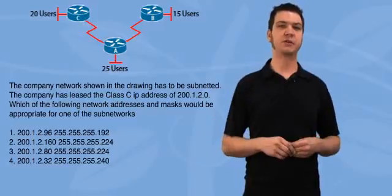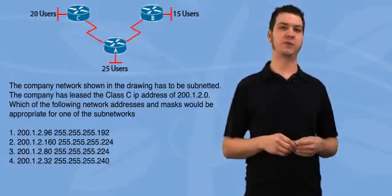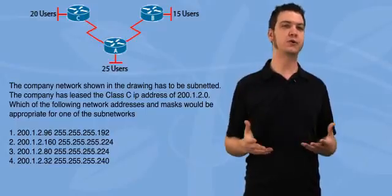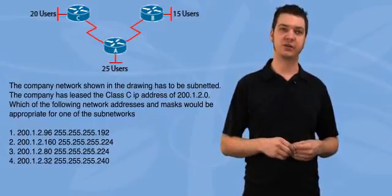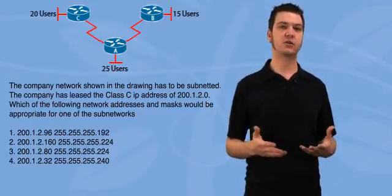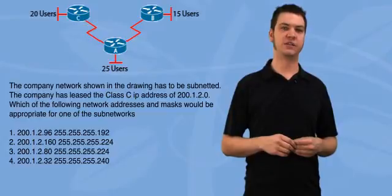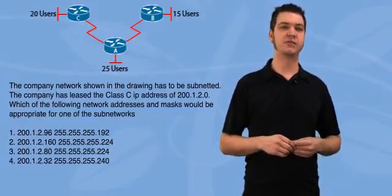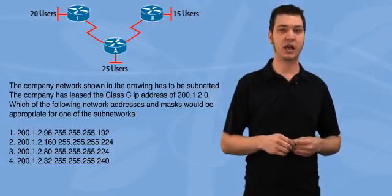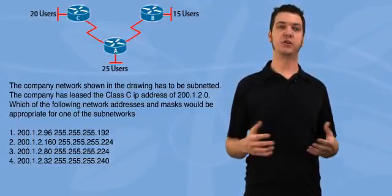In this third example, you're provided a topology and asked to determine a subnet mask that would be appropriate for use by the company. The number of host bits needed are 5, as this allows 32 IP addresses per subnet. This eliminates option 4, as there are only 16 IP addresses per subnet, and it eliminates option 1, as the subnet mask has 6 host bits. Option 3 is eliminated, since .80 is a host IP address and not a multiple of 32, which is defined by the subnet mask. Option 2 would be the correct answer.